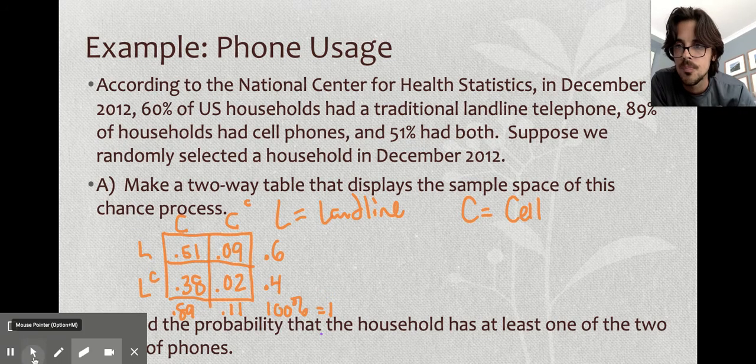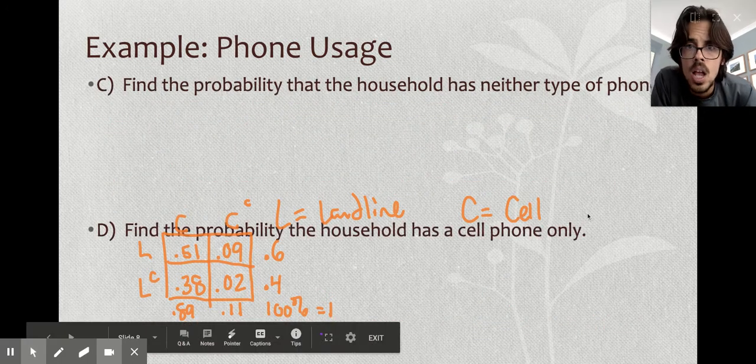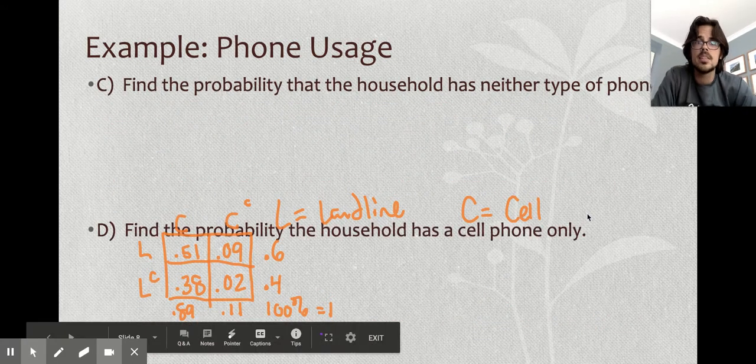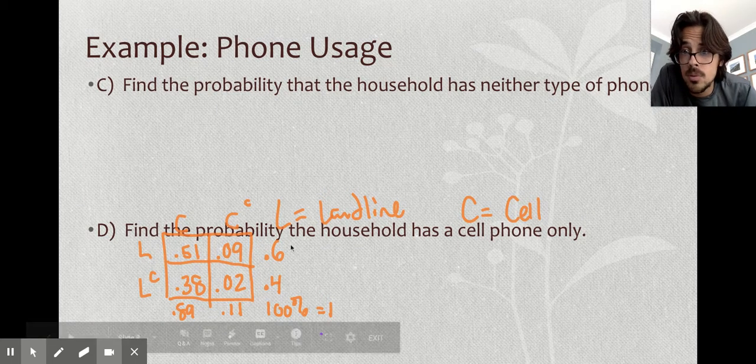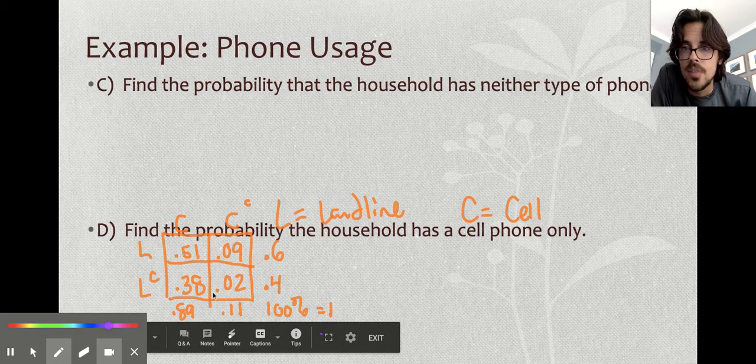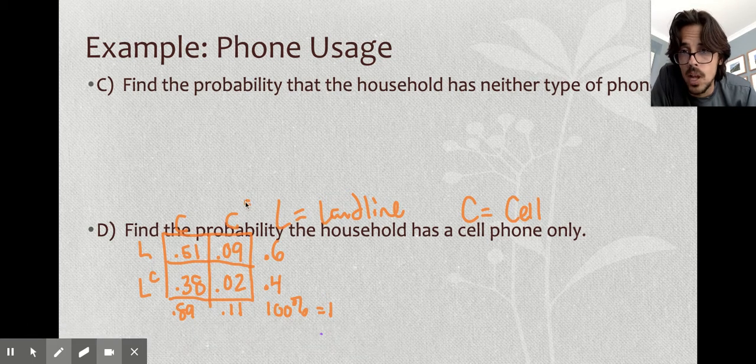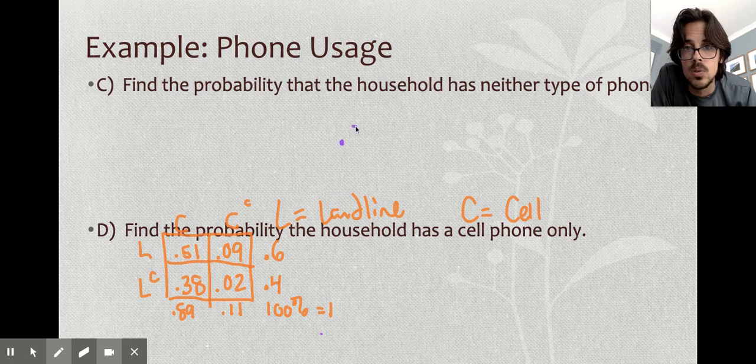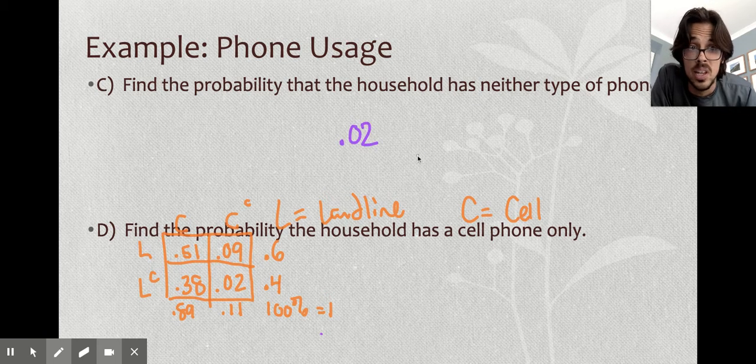Let's go on to the next page and answer a few more quick probabilities here. I'm going to keep my little picture. Next up, find the probability that the household has neither type of phone. Well, actually, I just identified that in the last one. That's going to be this box right here. You don't have a cell phone and you also don't have a landline. That's just the simple 2%. Really no work to show there to get that answer.